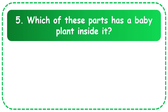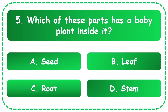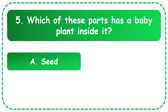Question 5: Which of these parts has a baby plant inside it? The options are seed, leaf, root, and stem. The answer is seed.